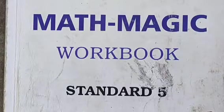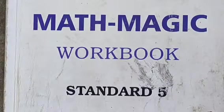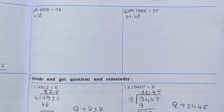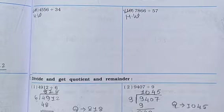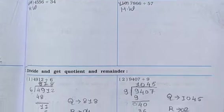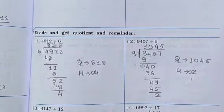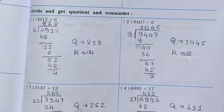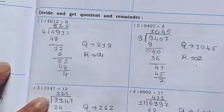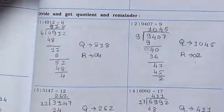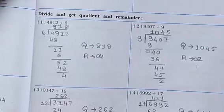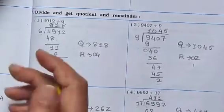Good morning everyone. Standard five mathematics, chapter number 13. Last classes we completed question number six, so today we are going to start question number seven. Divided and get content, and remember the first question number one.